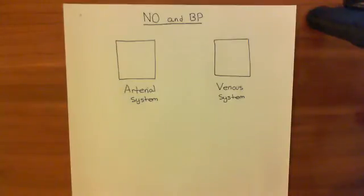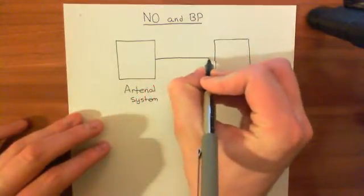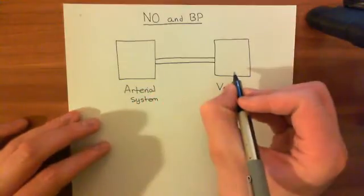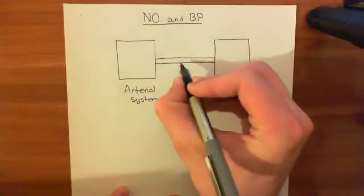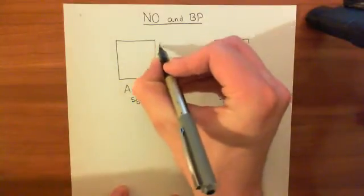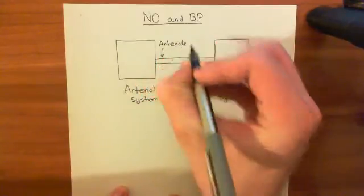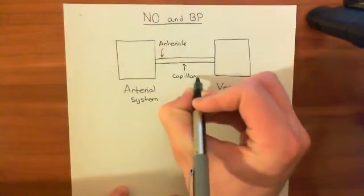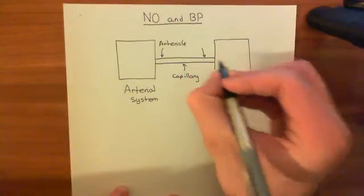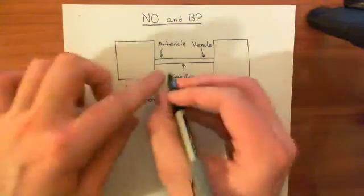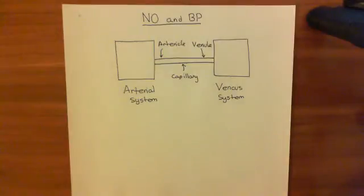Now we're going to put a tube in between these, so the arterial system is connected to the venous system and blood can move between them. This is a narrow tube — it represents the arterioles. And then more in the middle is the capillary, and more over towards the venous system is the venule. So these are the tubes connecting the arterial system to the venous system.